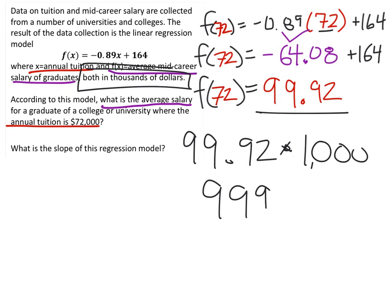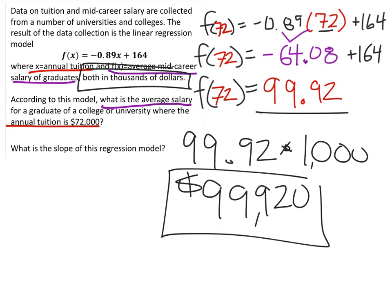99,920 in dollars. This would be the average salary based on the problem, average salary for a graduate of a college or university where the tuition was 72 grand.